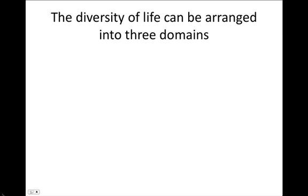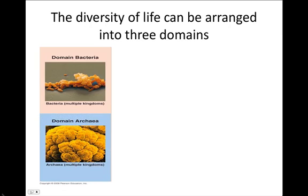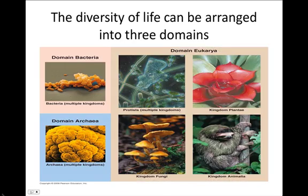The diversity of life can be arranged into three domains. Domains Bacteria and Archaea are living things composed of prokaryotic cells. In the domain Eukarya, all the living organisms are eukaryotic cells. The domain Eukarya is also broken down into sub-levels: protists, plantae, fungi, and animalia.